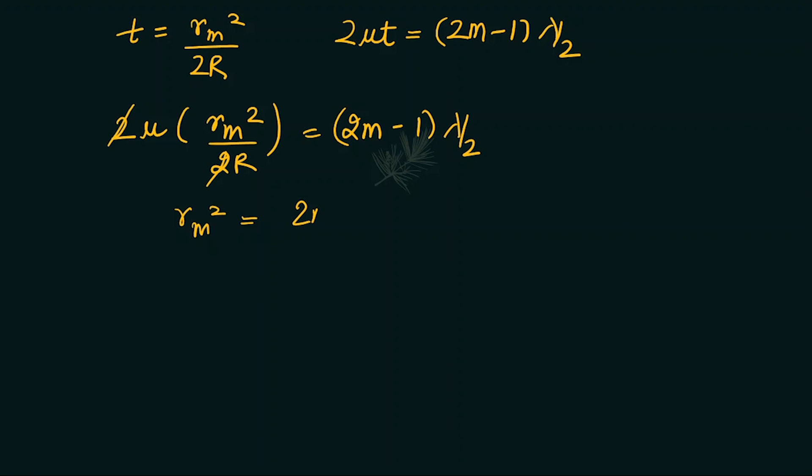So we get 2μt = (2m-1)λR/(2μ). The radius - we are given the diameter, so we can write this d_m/2, which equals √[(2m-1)λR/(2μ)].